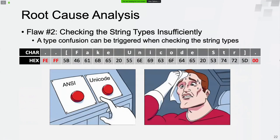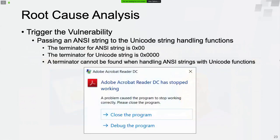Here we have a string where the first two bytes are FE and FF. Obviously this is an ANSI string and the string terminator is a 1-byte null character. However, Adobe Reader will treat it as a Unicode string since the first two bytes are FE and FF. Now it's clear how to trigger the vulnerability: we can pass a malformed ANSI string to the Unicode string handling functions. Because the terminator for ANSI string is a 1-byte null character and for Unicode string is a 2-byte null character, an out-of-bounds access can be triggered since the Unicode string terminator cannot be found.